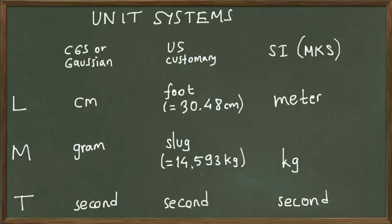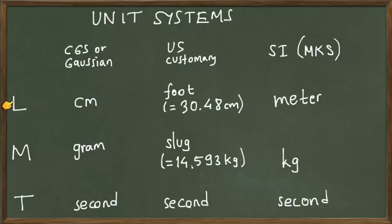So in mechanics there are three fundamental units: length, mass, and time. We use the capital L to denote length measurements, capital M for mass measurements, and capital T for time measurements.